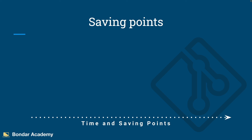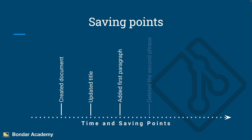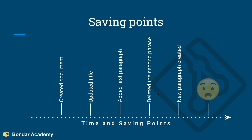If we put these activities on a timeline — where time is a horizontal line and saving points mark each action — the first saving point is when you created the document and clicked save. Then you updated the title and saved again. Then you added a first paragraph and saved. Then you deleted the second phrase in the first paragraph, then created a new paragraph and saved. Working on the third paragraph, you realized you need that second phrase you deleted yesterday. But how to get it? Unfortunately, there is no way to recover this information with a simple save, because you cannot go back in time and recover changes made in the past.